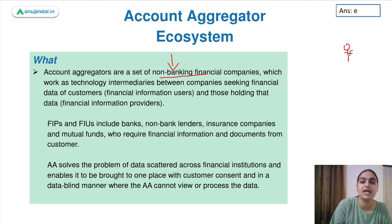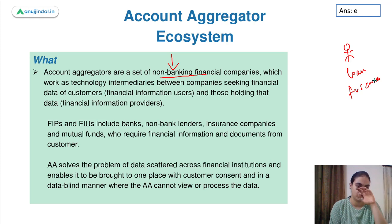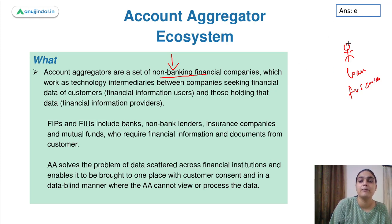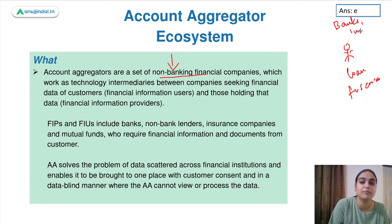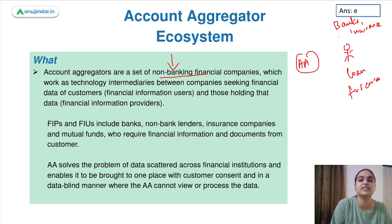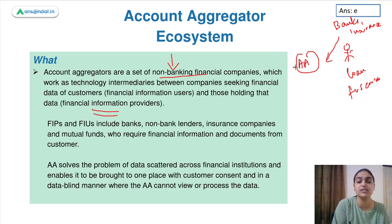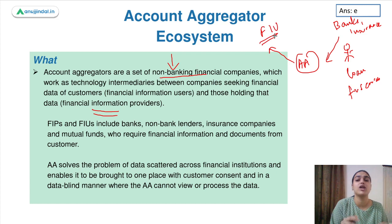Suppose there is a customer who wants a loan or some other financial service. Every time he applies for a loan he needs documentation, and if he has to pay some taxes, again entire documentation is needed. Account aggregators basically take permission from customers as to what information they can use. There are different banks, insurance companies, and NBFCs which have this information. Account aggregators, as per the permission of the customers, seek this information from these banks and insurance companies — whom we call financial information providers — and then share that information with the financial information users. Financial information users can be other banks, other insurance companies, or other NBFCs which have to provide financial services to the customers.